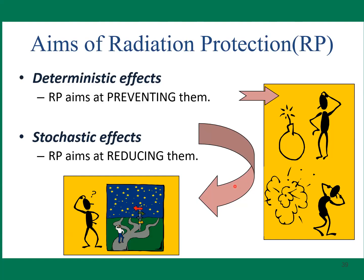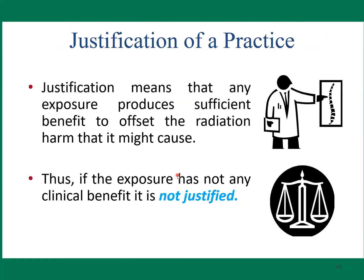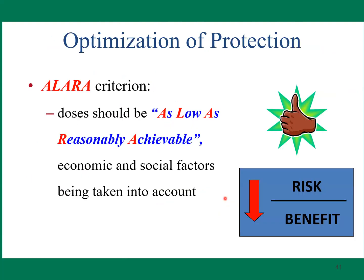The aim of radiation protection: for deterministic effects, aim to prevent damage. For stochastic effects, justification means any exposure must produce sufficient benefit to offset the radiation harm it might cause — if exposure has no clinical benefit, it is not justified. Doses should be as low as reasonably achievable (ALARA), considering economic and social factors.